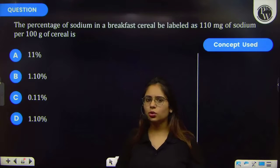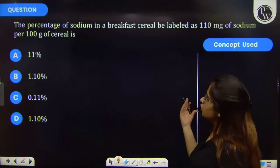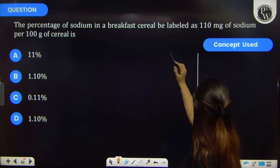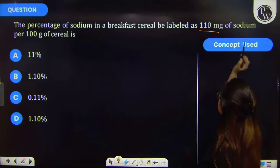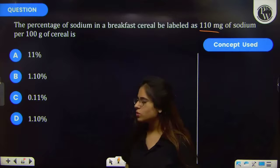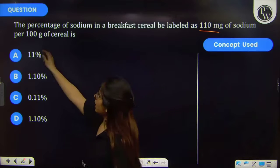So, a cereal which comes to a breakfast, there is an element of sodium present. How much of the mass is present? It is 110 mg. And the cereal means that our whole compound is equal to 100 g.